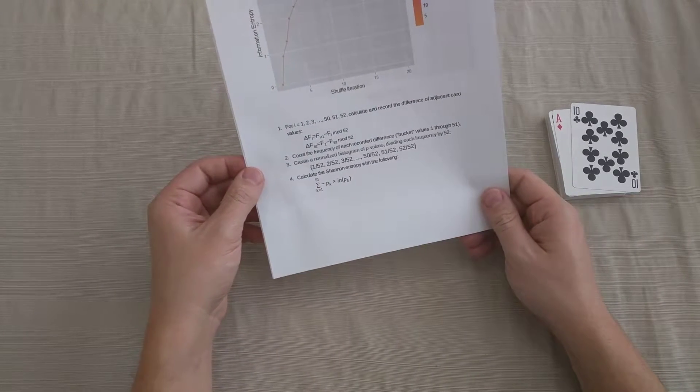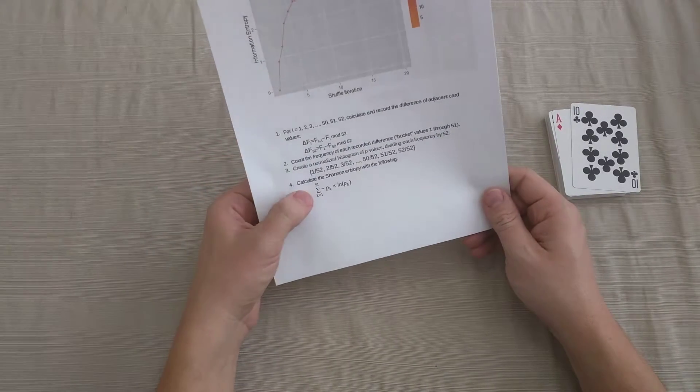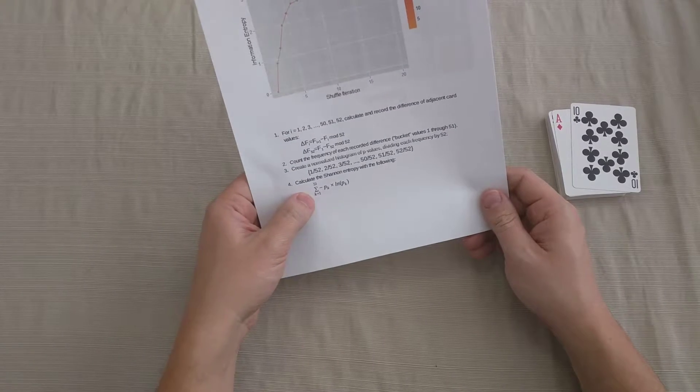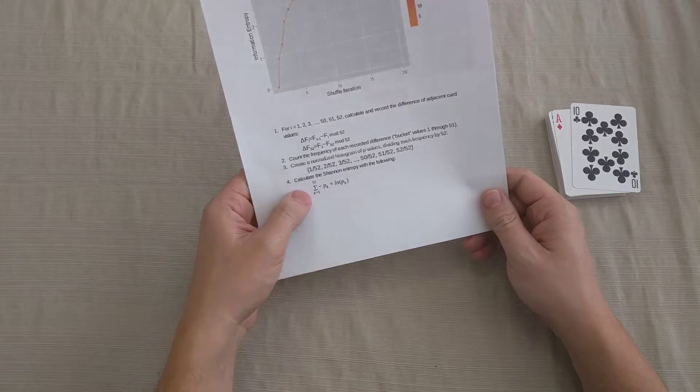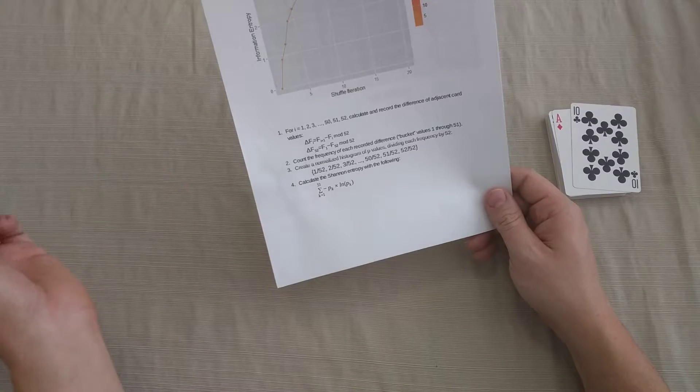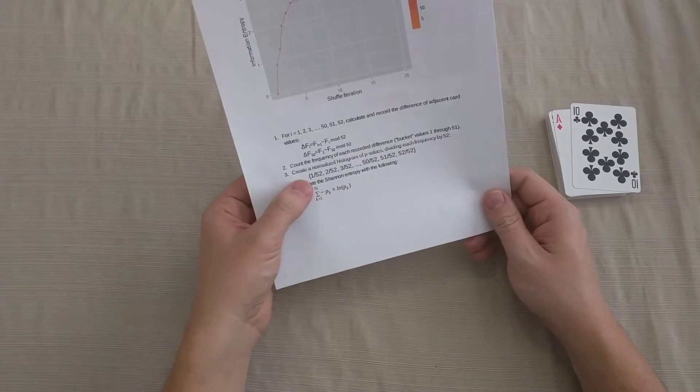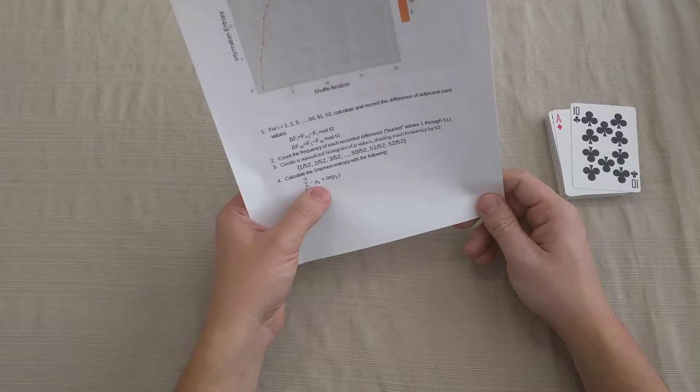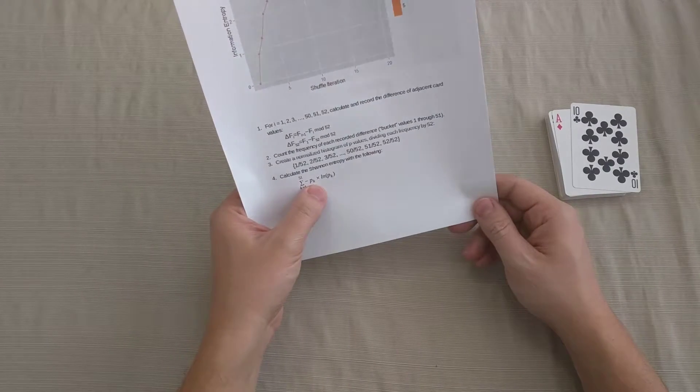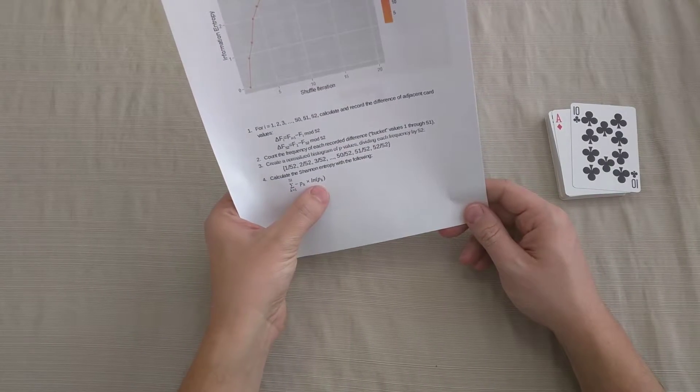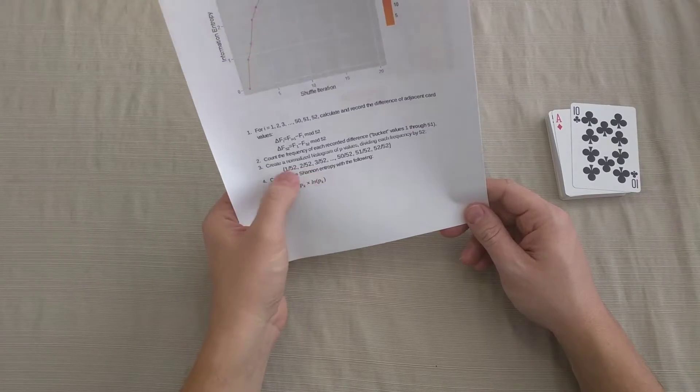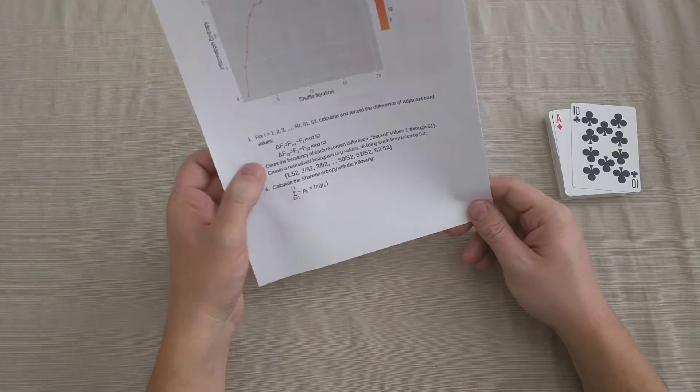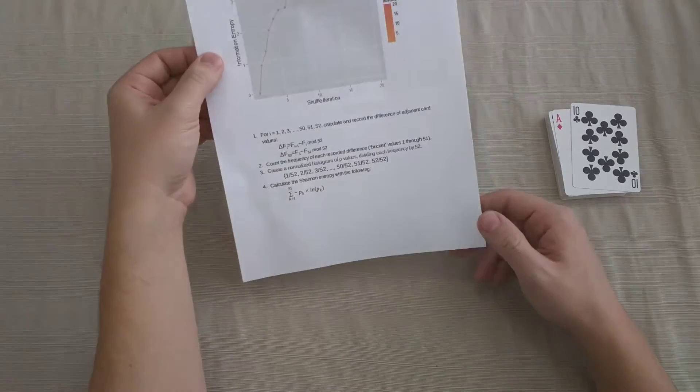These are going to give me a histogram of p values. I then want to calculate the Shannon entropy of my deck. And this is by summing all 51 possible recorded buckets, all 51 p values. Some of them will be zero. And I will take the negative p value times the natural log of that p value. This is defined as Shannon entropy.